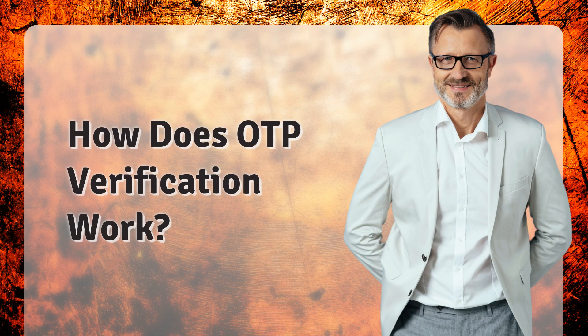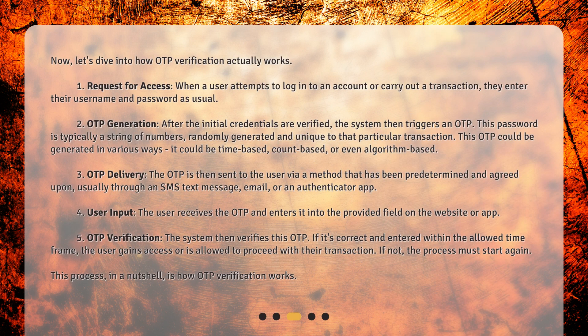How does OTP verification actually work? 1. Request for access: When a user attempts to log into an account or carry out a transaction, they enter their username and password as usual. 2. OTP generation: After the initial credentials are verified, the system then triggers an OTP. This password is typically a string of numbers, randomly generated and unique to that particular transaction. This OTP could be generated in various ways — it could be time-based, count-based, or even algorithm-based.